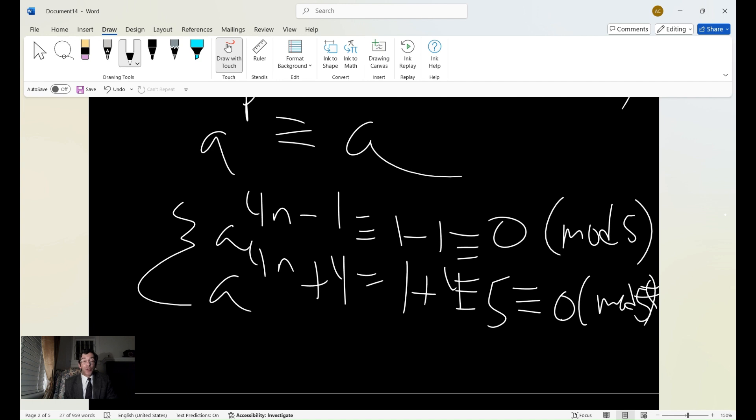And we also have a^(4n) + 4 is congruent with 1 + 4, which means 5. And that gives us modulo 5. So we're basically done.